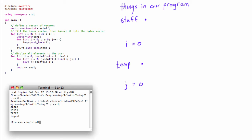We're ready to iterate the inner loop five times. In the first iteration we push back `i` into `temp`, so `temp` ceases to be size zero and we create the first element with the value of `i`, which is zero. Then we go back into the loop, increment `j` to one — `i` is still zero — and push back `i` into `temp` again, creating a second element with value zero. Note: we're pushing back `i`, not `j`.